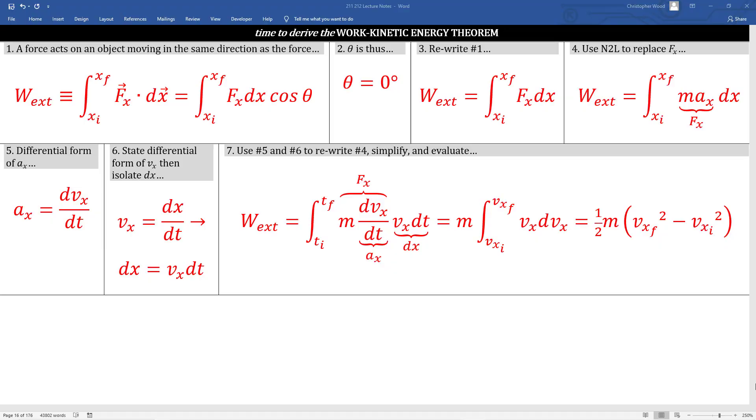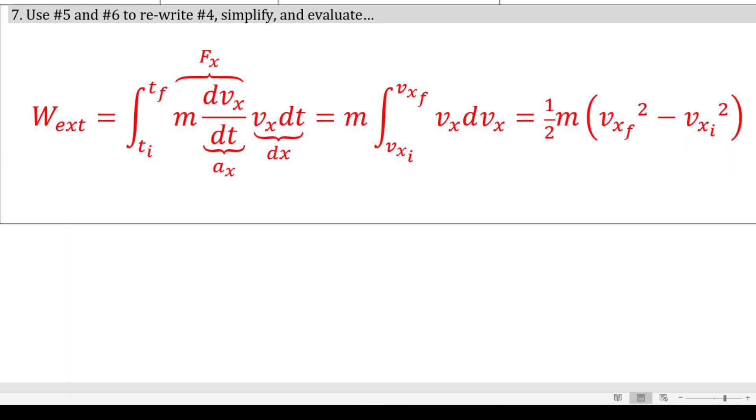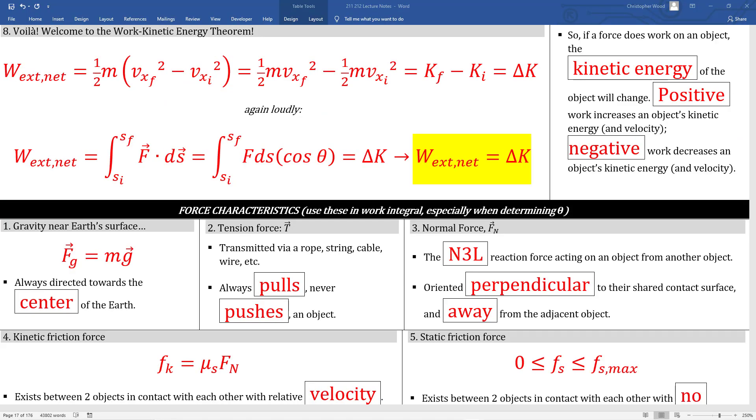Box 3, cosine of zero is one. Box 4, here's an interesting move. I'm using Newton's second law to replace the variable f with mass times acceleration. Box 5, I remember the calculus definition for instantaneous acceleration. Box 6, I remember the calculus definition for instantaneous velocity. I do a little rearranging. I get to box 7, which looks really busy so give yourself a lot of time to really study it and review it and ask any questions if there's anything that doesn't make sense. Box 8 is recapping box 7. The resultant yellow highlighted formula here is the work kinetic energy theorem. The net work acting on an object equals that object's change in kinetic energy.